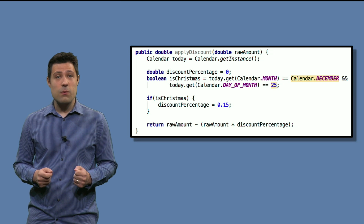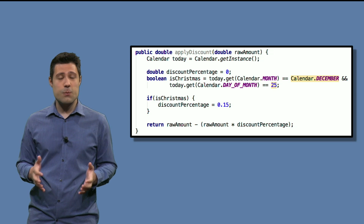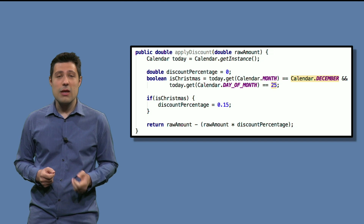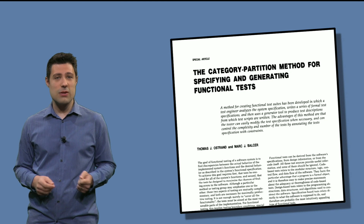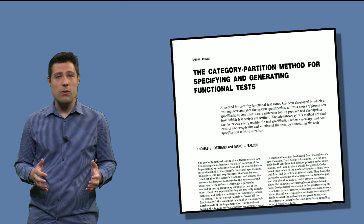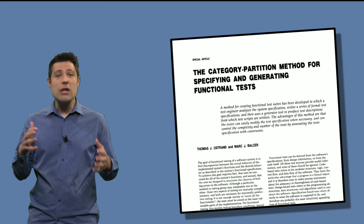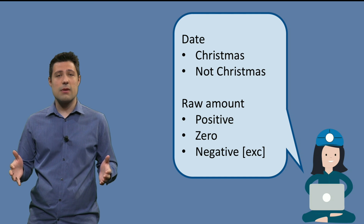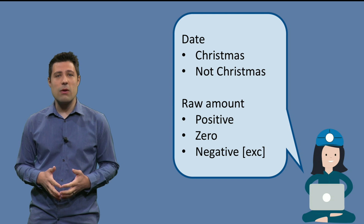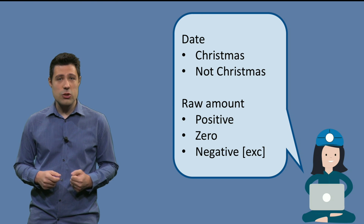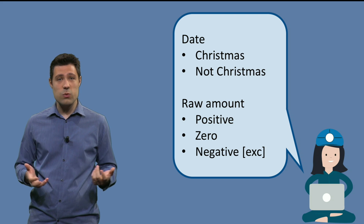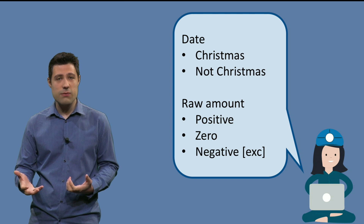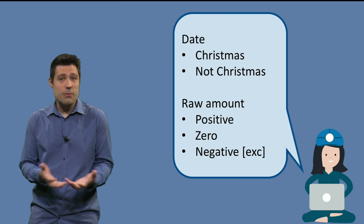This is the method we want to test. From the test design perspective, the way the implementation works doesn't affect this that much. So let's do functional testing again, using the category partition method that we saw in the functional testing week. The idea of this method was to think about all the parameters and their characteristics and then do the combinations. For example, the two parameters we have for this problem are the date and the raw amount. The date can be Christmas or not Christmas, and the amount can be positive, zero, or negative as an exceptional case. We do all the combinations and then we have all the tests we need to do.